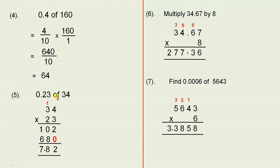0.23 of 34, so we multiply 34 by 23. 3 fours are 12. 3 threes are 9 and 1 is 10. Put down the zero because when you multiply by 2, you're actually multiplying by 20. 2 fours are 8, 2 threes are 6. Add all these up to give us 7, 8, 2. So when we do that, we have 782.